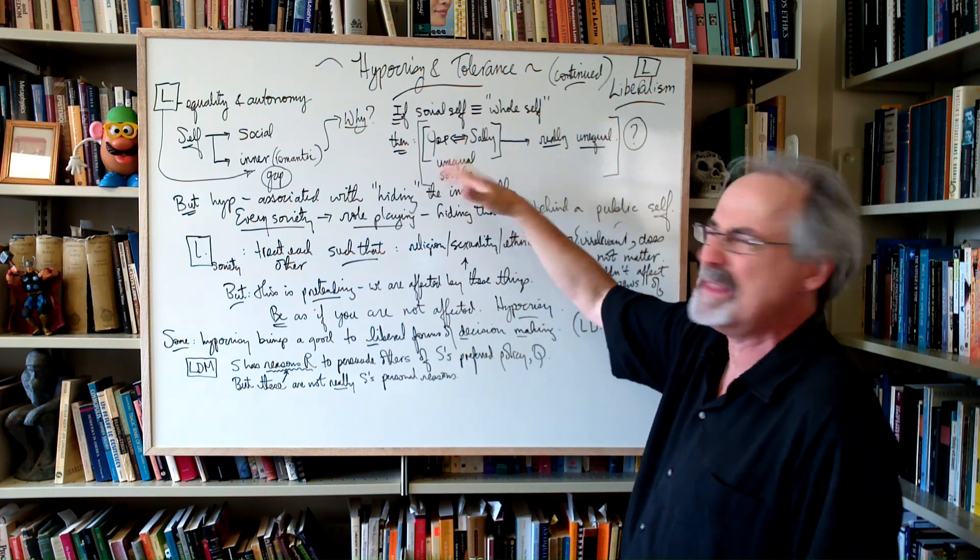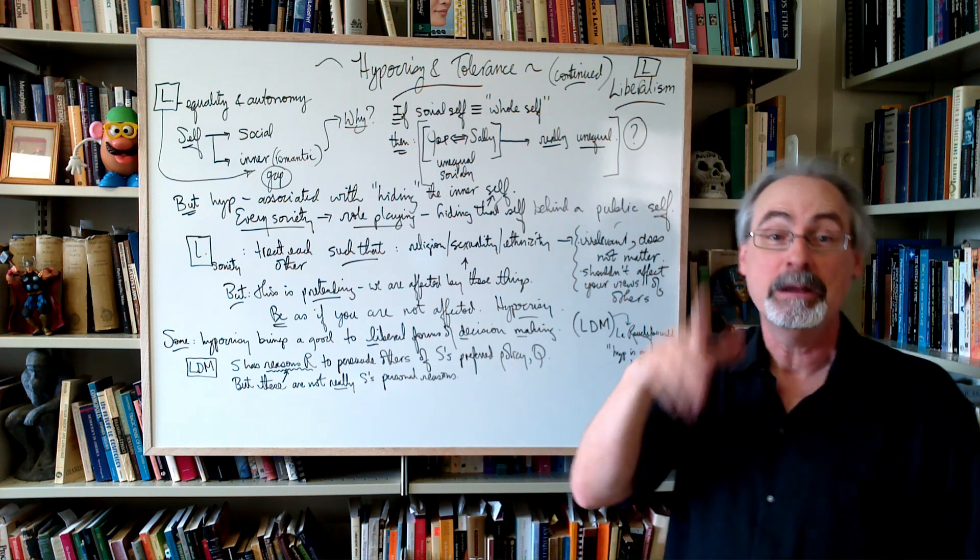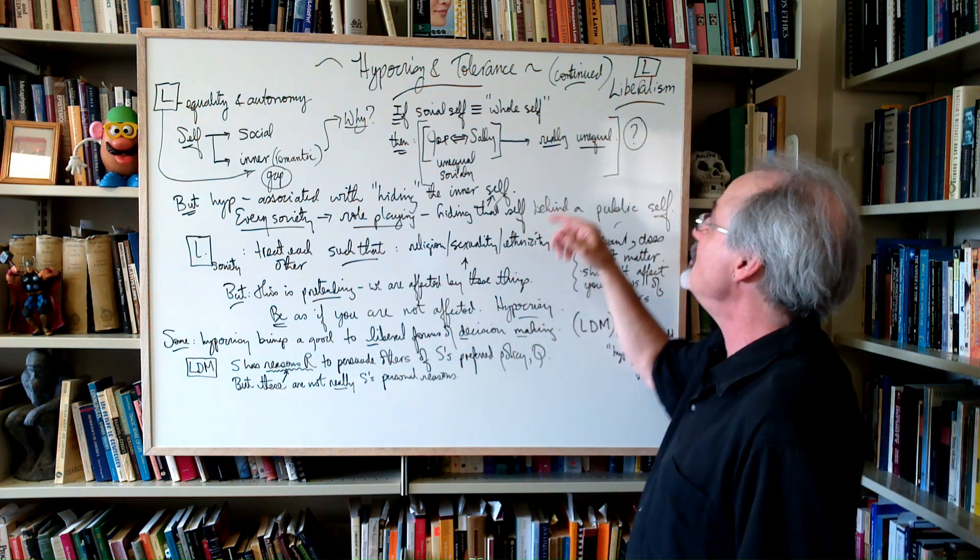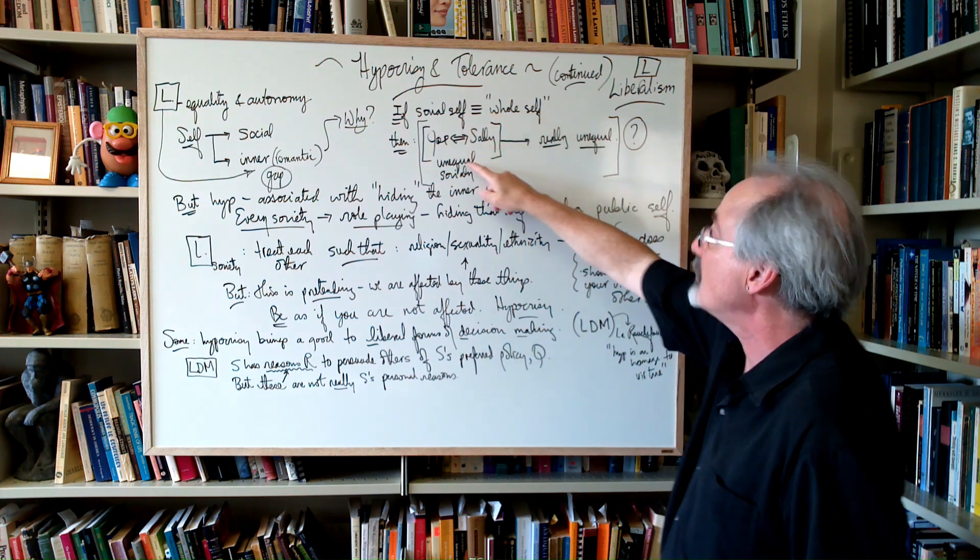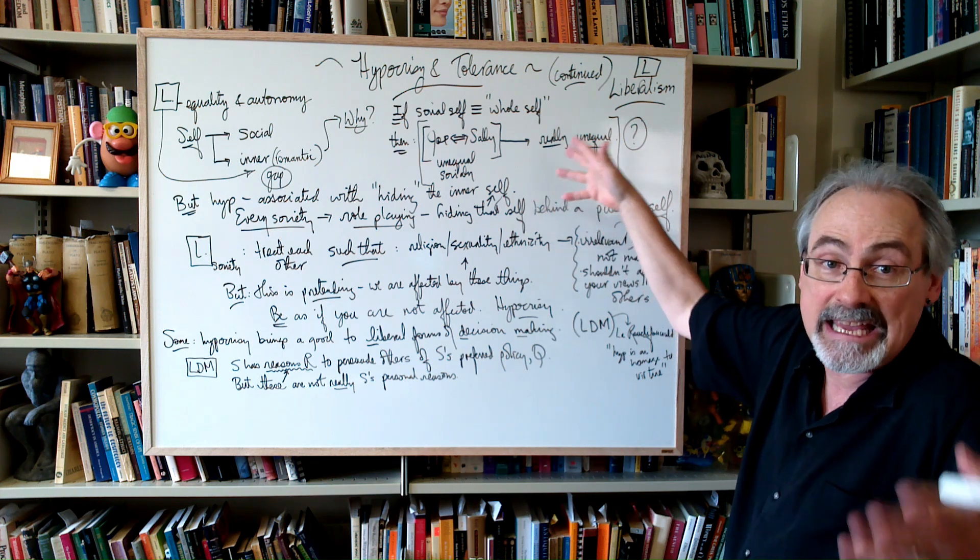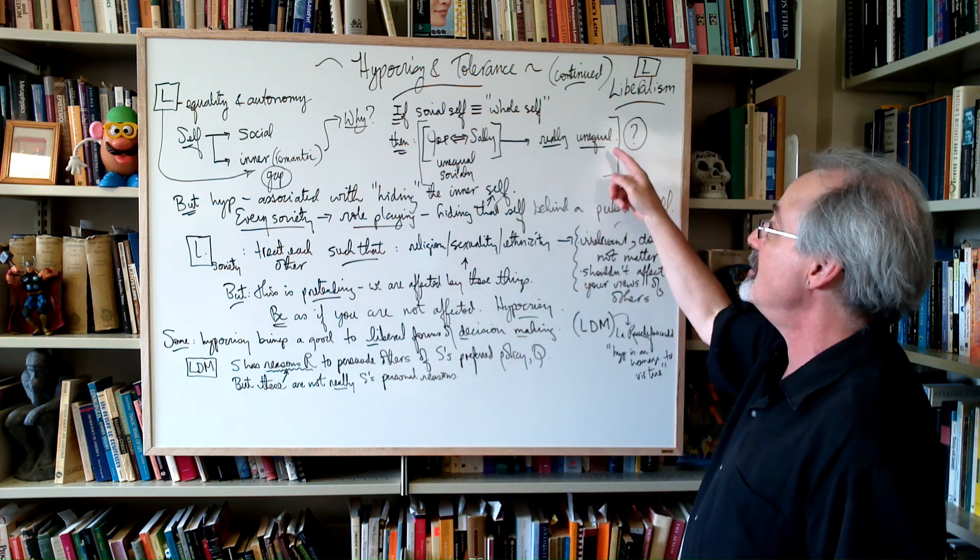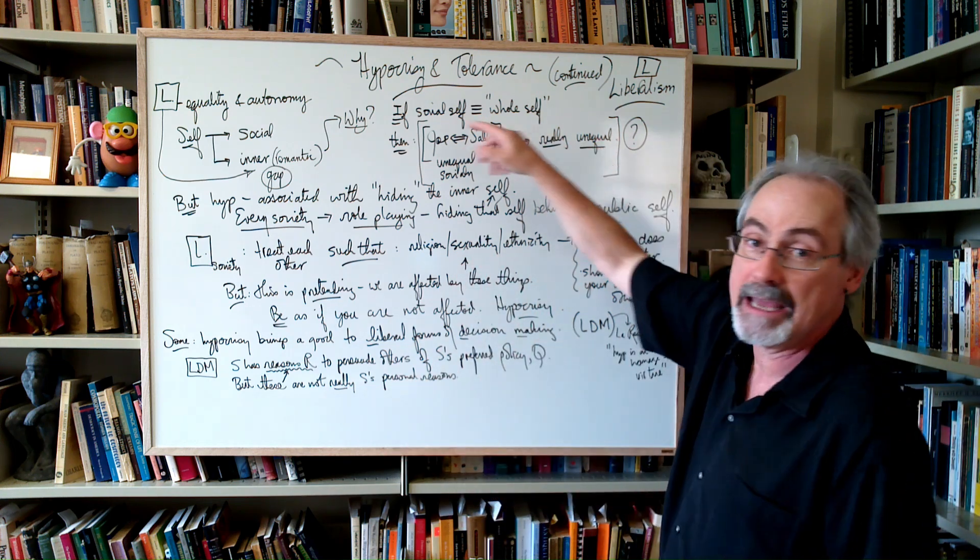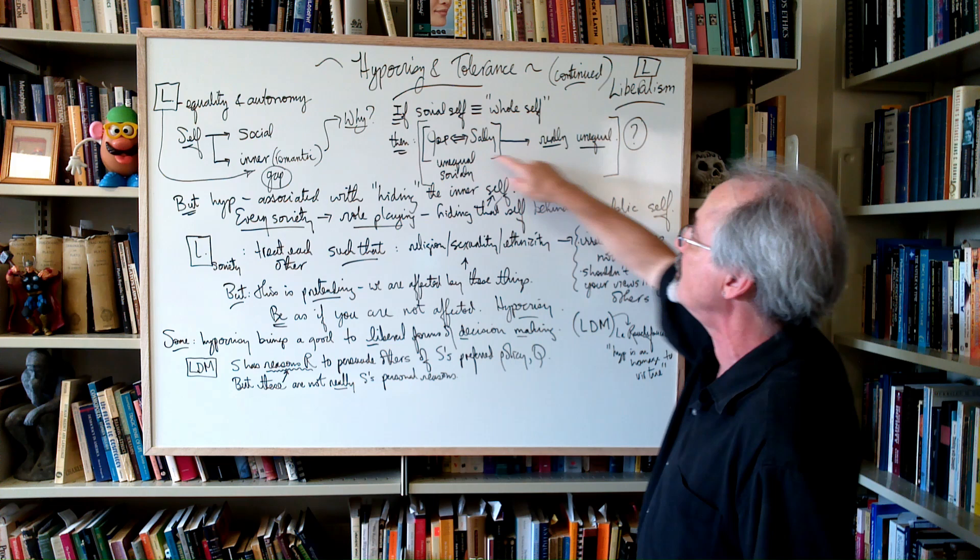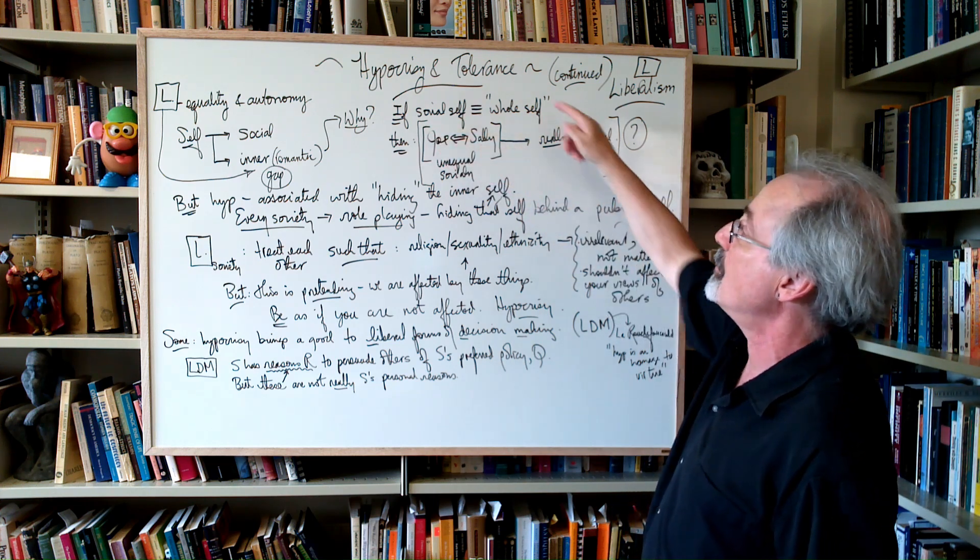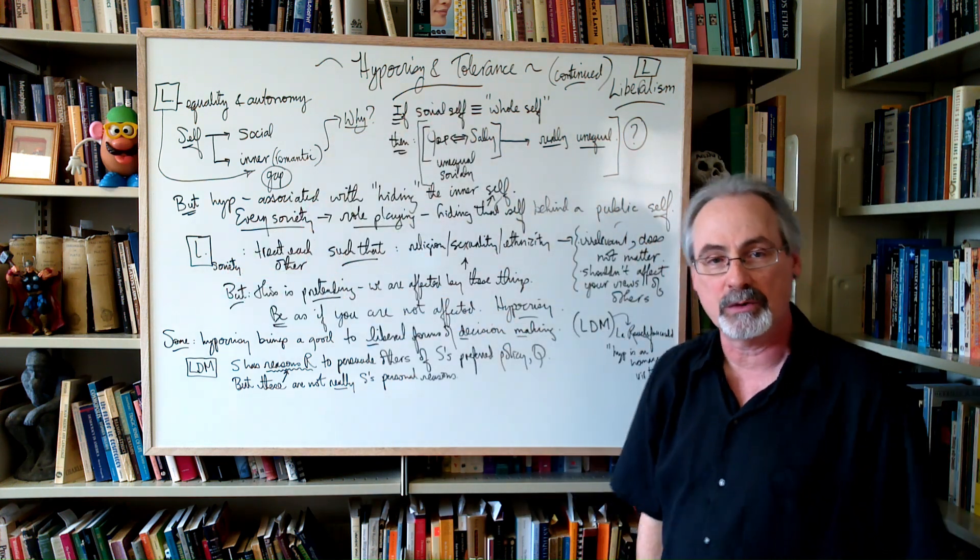But most people would say, oh but that's, no, no, no, no. That's a social inequality. That's not a real inequality. Fine, if you want to say that. But if you do want to say that, then you're going against this here. Then, because that presupposing that the social self is the whole self leads you to this inequality being the whole story. And if you want to say, no, that's not the whole story, then you're denying this.